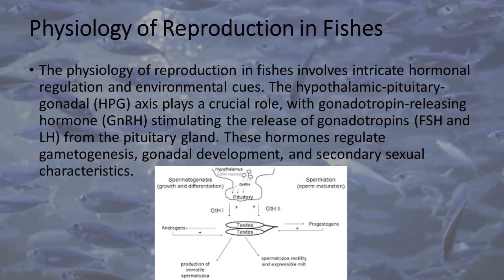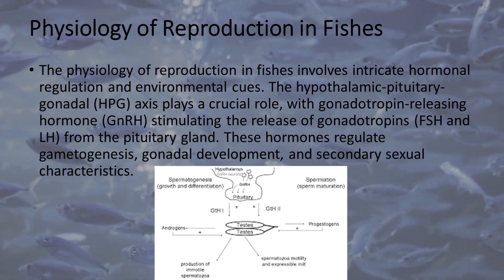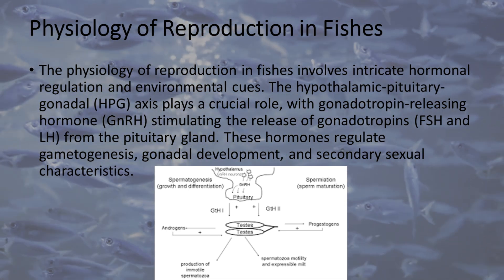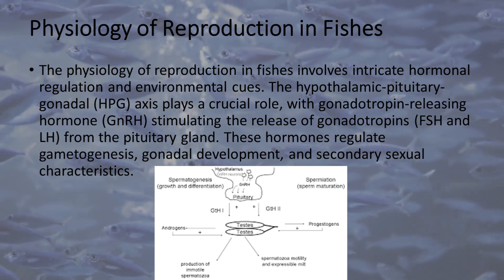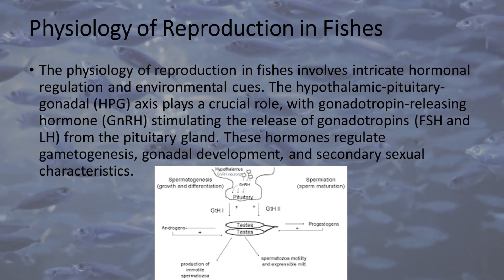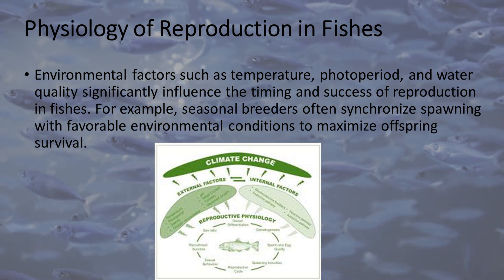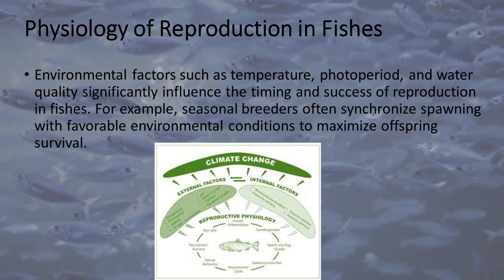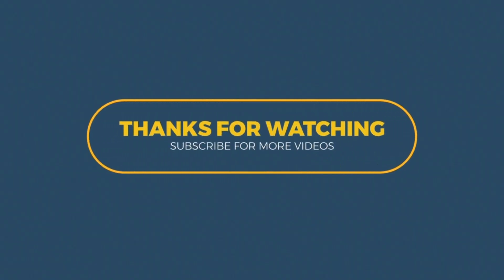Physiology of Reproduction in Fishes. The physiology of reproduction in fishes involves intricate hormonal regulation and environmental cues. The hypothalamic-pituitary-gonadal axis plays a crucial role, with gonadotropin-releasing hormone (GnRH) stimulating the release of gonadotropins FSH and LH from the pituitary gland. These hormones regulate gametogenesis, gonadal development, and secondary sexual characteristics. Environmental factors such as temperature, photoperiod, and water quality significantly influence the timing and success of reproduction in fishes. For example, seasonal breeders often synchronize spawning with favorable environmental conditions to maximize offspring survival.